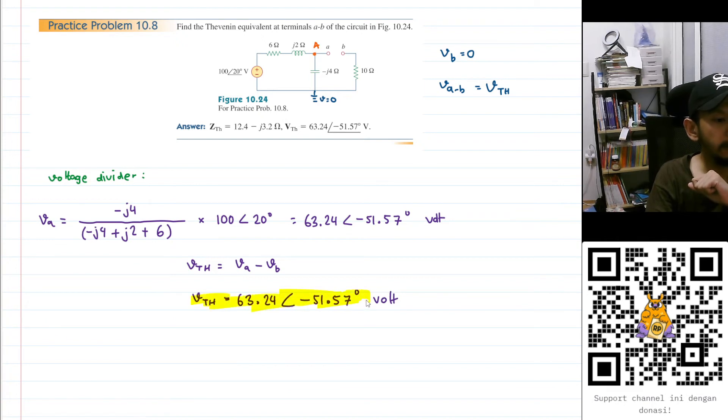Now let's find out the Thevenin resistance. To do that we need to take a look at the resistance from this side here, but with this voltage source replaced by short circuit.